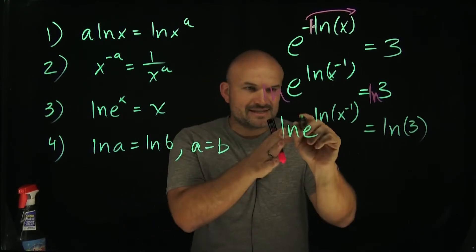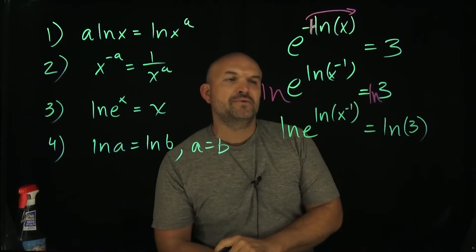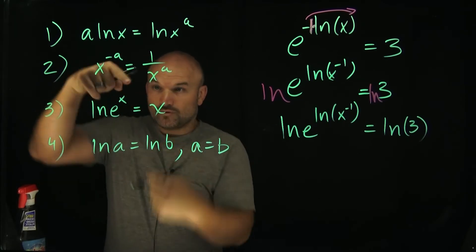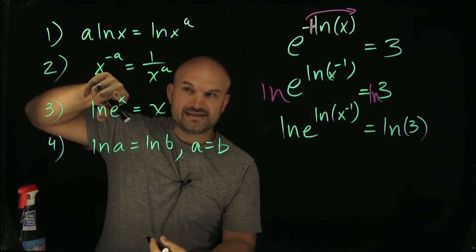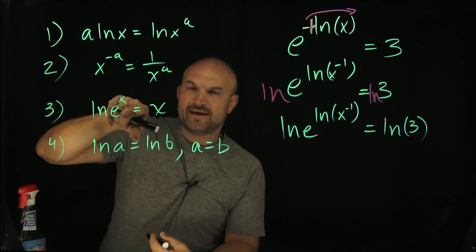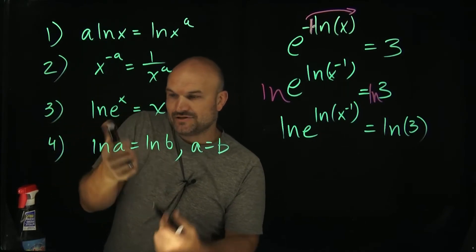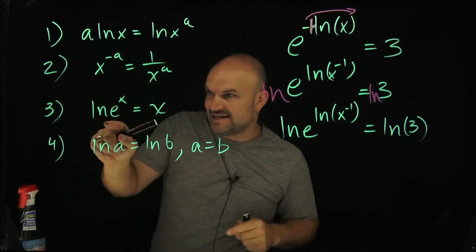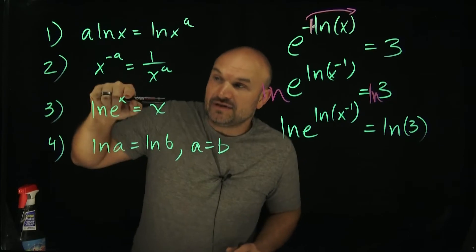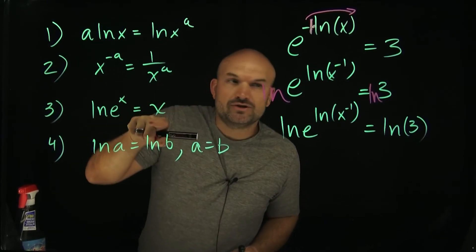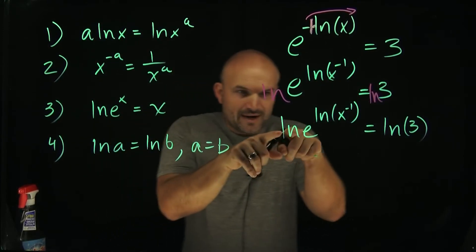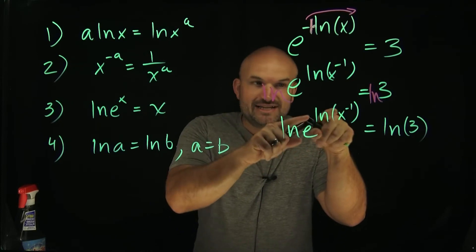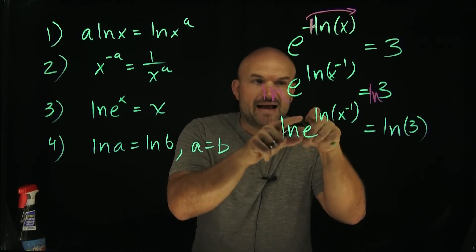Adding in some parentheses for the arguments. Now we can use this property: ln of e raised to a power is just equal to whatever that power is. Remember, ln has base e. So any logarithm where the base equals the argument's base raised to a power — that just equals the power. When I have ln base e of e raised to ln of x to the negative 1, that side is now equal to ln of x to the negative 1.